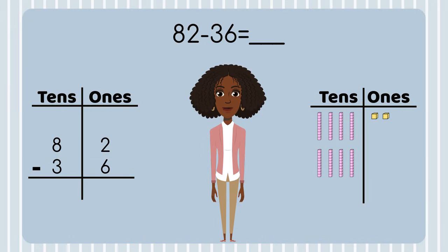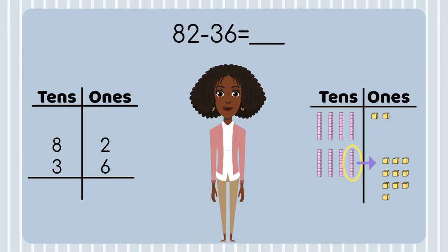It's very important to always start in the ones place when subtracting. If you don't, you could ruin your math, because you might need to regroup and you won't know that unless you start in the ones place. So I'll start by looking at the ones place. In the ones place, I have two ones and I need to take away six ones, but I don't have enough to subtract. So I'll regroup — I'll go to the next place value spot, which is the tens place, and take a ten and move it into the ones place.